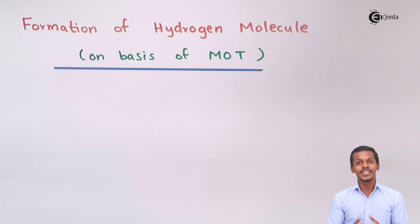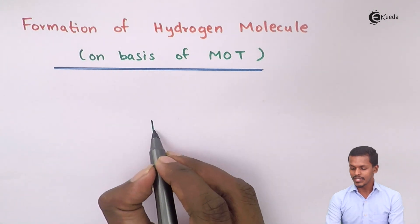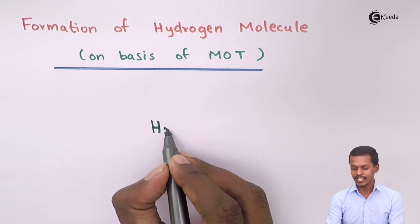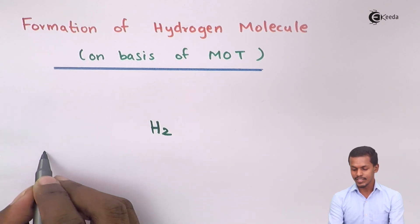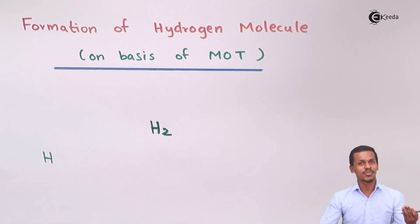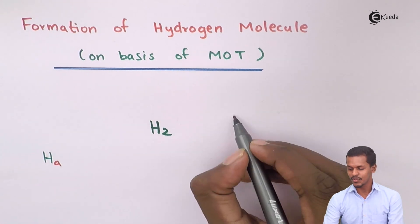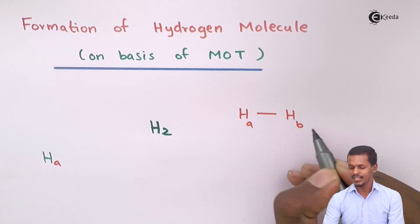Molecular orbital theory is basically known as MOT. Based on that we are going to talk about how the hydrogen molecule is formed. Hydrogen molecule is written as H2 because we are not concerned with the hydrogen atom — we are concerned with the overall molecule H2. We can write H2 as HA and HB.